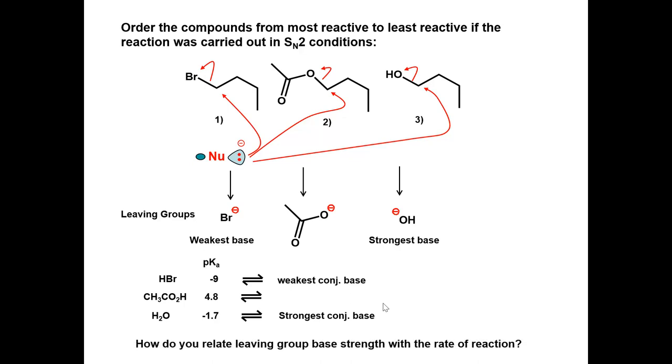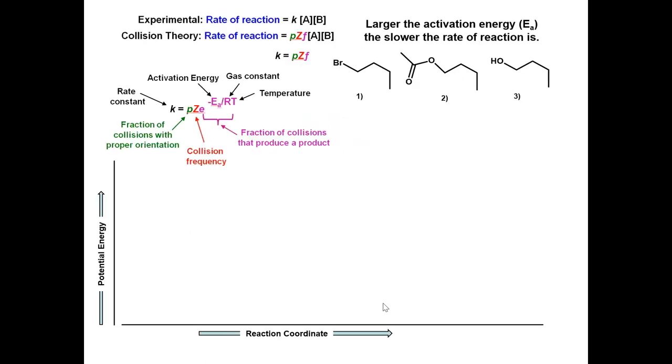How do we relate base strength of the leaving group with the rate of an SN2 reaction? Remember the rate constant in the rate equation is dependent on the activation energy, and the larger the activation energy, the slower the reaction rate is.